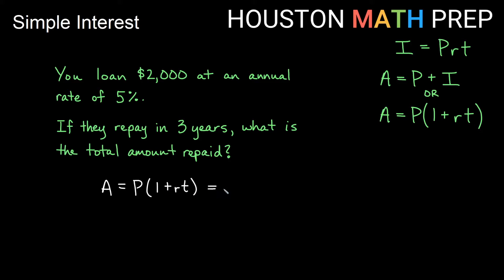We might be able to do it all in one shot. So my principal that I've loaned is 2,000 times one plus the rate as a decimal. 5% if we move that over two places is going to be 0.05 times T and T in years is going to be three. So if we enter this into the calculator and make sure we include our parentheses, then we will get that the accumulated value for this loan is actually going to be 2,300. So in three years, they would pay us back 2,300.